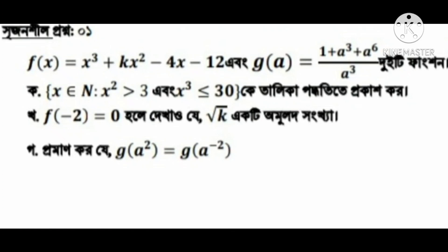Function: x cube plus k·x squared minus 4x minus 12. Also g(a) = x squared plus a cube plus 6a cubed. Define the function such that x ∈ ℕ: if x squared greater than 3 then x cube, if x cube less than or equal to 3 — apply.